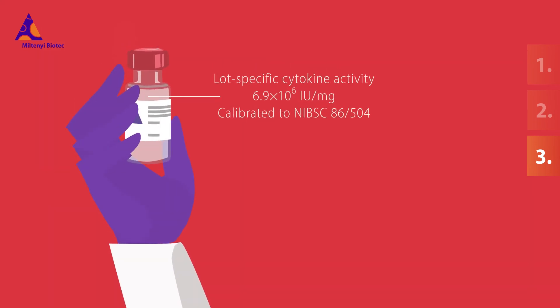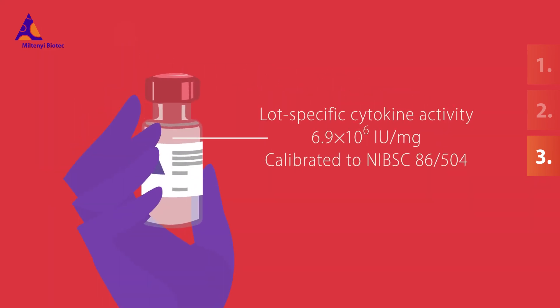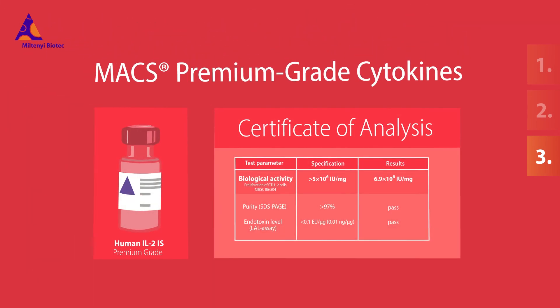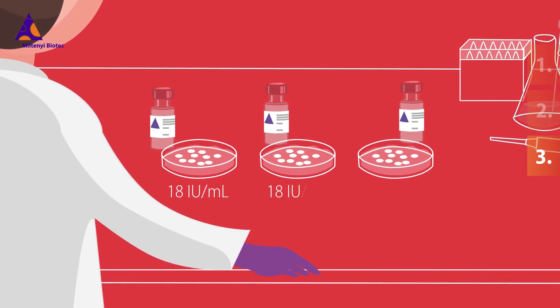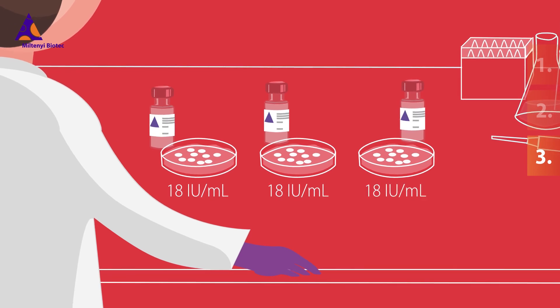If the calibrated lot-specific cytokine activity is given, as is the case for MACS premium grade cytokines, you can skip repeated titration experiments. Following your activity-based protocol, you can always add the optimal amount of active cytokine to your experiment without the need for additional tests.